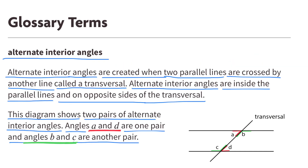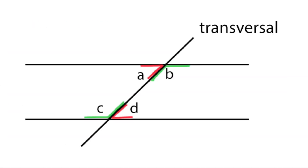Alternate interior angles are created when two parallel lines are crossed by another line called a transversal. Alternate interior angles are inside the parallel lines and on opposite sides of the transversal. This diagram shows two pairs of alternate interior angles. Angles A and D are one pair, and angles B and C are another pair.